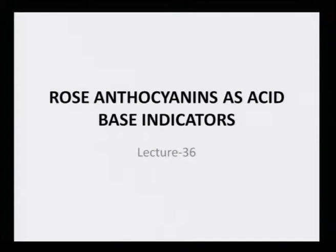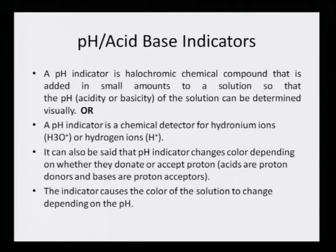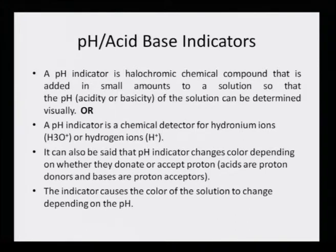Let us take a look at rose anthocyanins as acid-base indicators, where the rose anthocyanin dye plays the main role. A pH indicator is a halochromic chemical compound that is added in small amounts to a solution so that the pH — that is, the acidity or basicity of the solution — can be determined visually. A pH indicator is a chemical detector for hydronium ion H₃O⁺ or hydrogen ion H⁺.